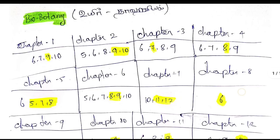Chapter 2: question numbers 5, 6, 8, 9, and 10 are important. Questions 9 and 10 are 5-mark questions.